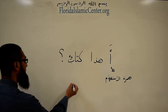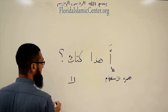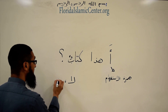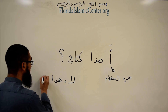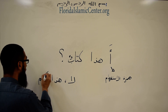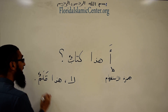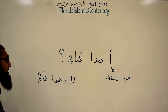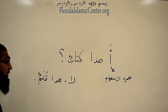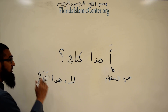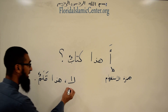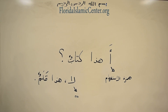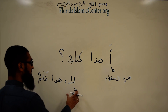Obviously you know it's not a book. So what would you say? You would say: لا — which means 'No.' And then you state what it is: لا، هذا قلمٌ — 'No, this is a pen.' لا هذا قلمٌ. Very easy. And لا means 'No.' So we did naam which means 'Yes,' and laa which means 'No.'